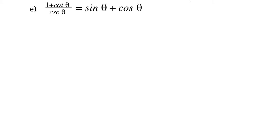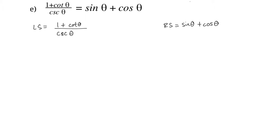Here's our next trig identity. On our left side we have 1 plus cotangent theta over cosecant theta, and on our right side we have sine theta plus cosine theta. The left side definitely looks more complex — we have cotangent and cosecant. Let's change those both in terms of sine and cos. Cotangent is the reciprocal of tan, so since tan equals sine over cos, cotangent equals cos theta over sine theta. And cosecant is the reciprocal of sine, so cosecant of theta equals 1 over sine theta.